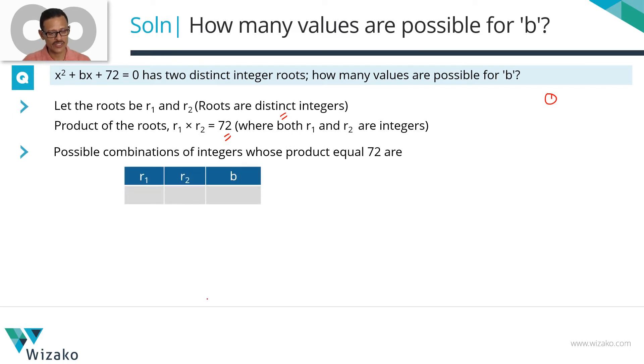Let's get started. The most obvious: r1 could be 1, r2 could be 72. Product equals 72, sum is 73. We've written that b equals minus of r1 plus r2, so if r1 plus r2 is 73, one value that b can take is minus 73. Second possibility: 1 divides 72, so 1 into 72. 2 divides 72, so 2 times 36 is another way. Sum becomes 38, so the value of b becomes minus 38. This is the second value.